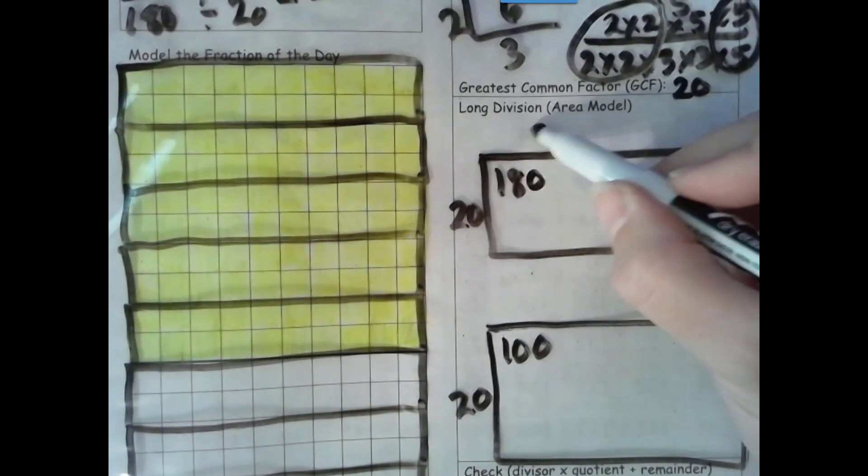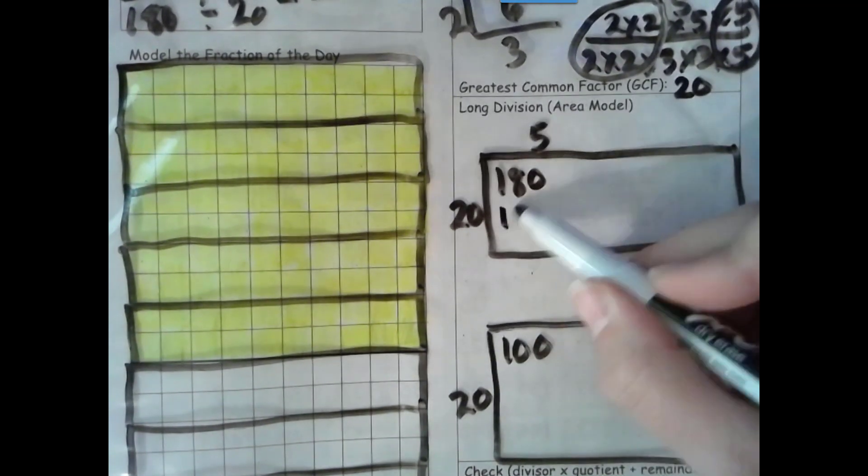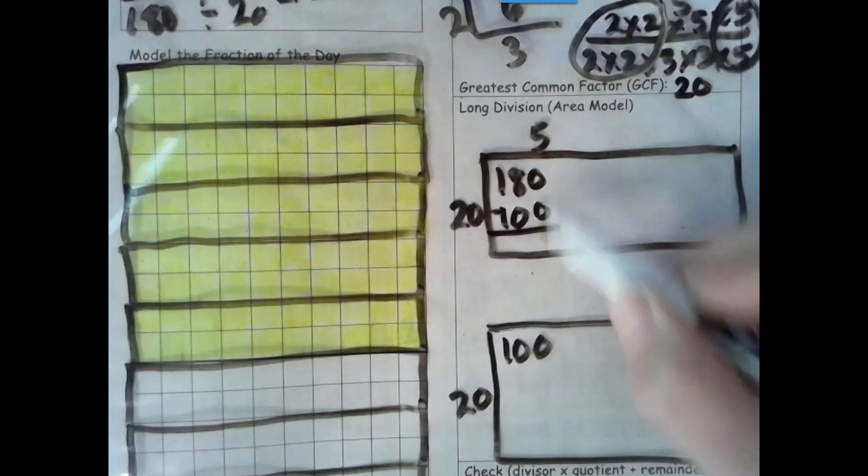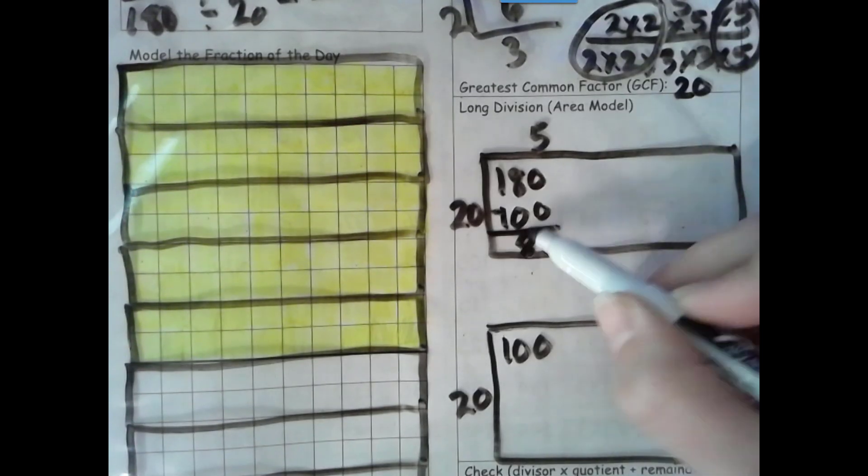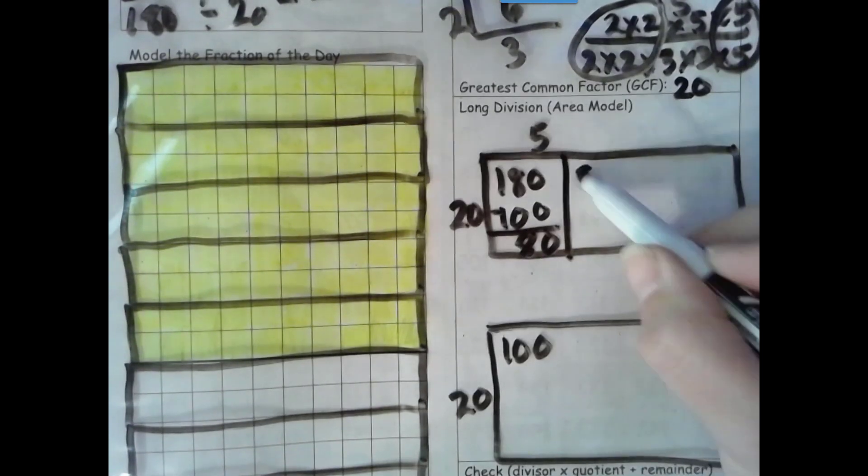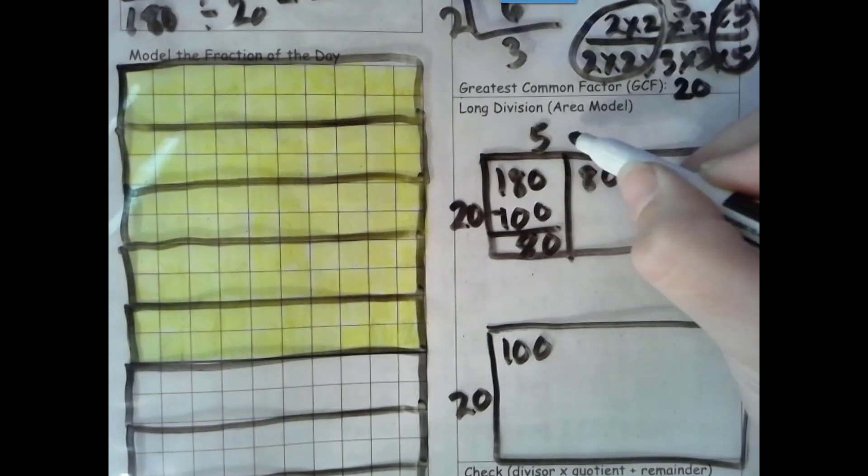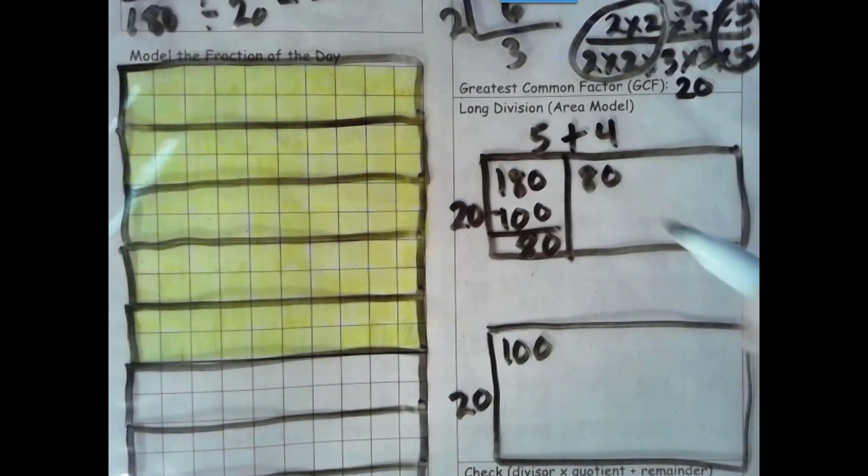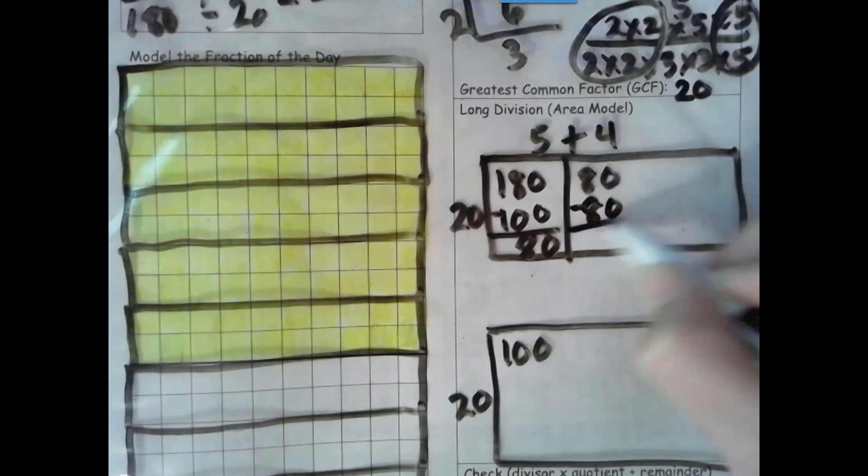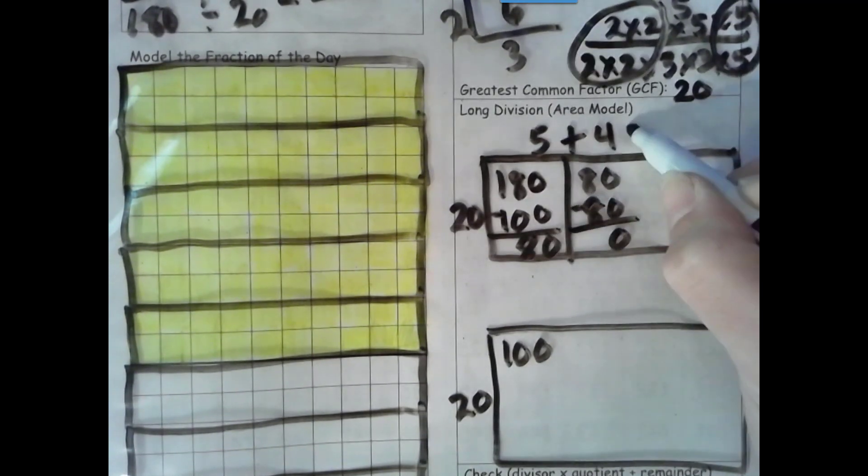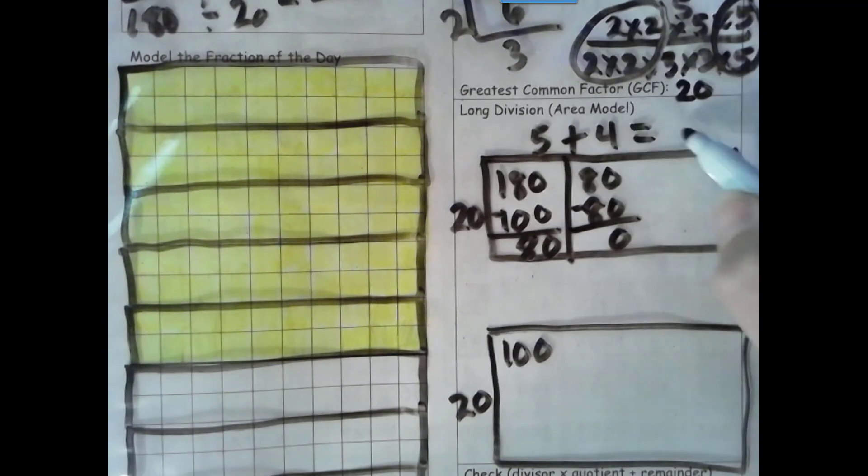So 5 groups of 20 is 100. The number is the same. Zero is a game. More on top. No need to stop. The number is the same. Zero is a game. The 80. And let's see. 4 times 20 is 80. The number is the same. Zero is a game. Add these together. 5 plus 4 is 9.